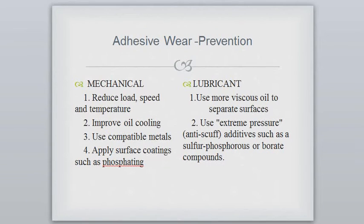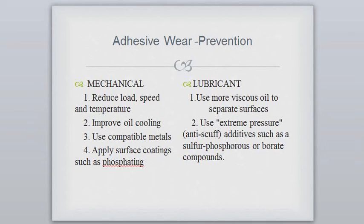What kind of prevention should be taken when adhesive wear occurs? There are two types of prevention: mechanical and lubricant. Mechanically: first, reduce load, speed, and temperature and improve oil cooling; second, use compatible metals; third, apply surface coating such as phosphating. For lubrication: use more viscous oil to separate the surfaces; use extreme pressure additives such as sulfur, phosphorous, or borate compounds.